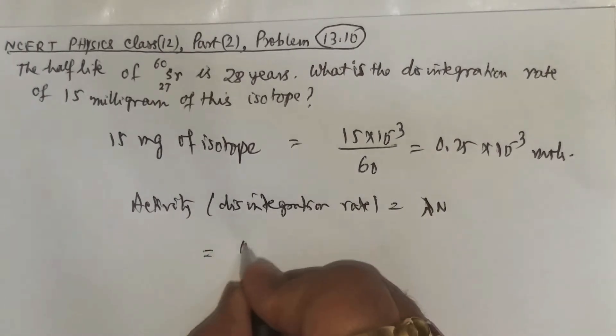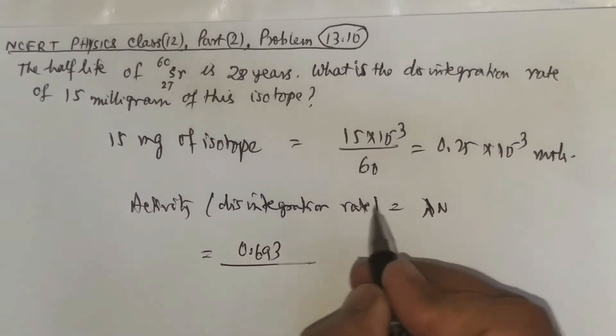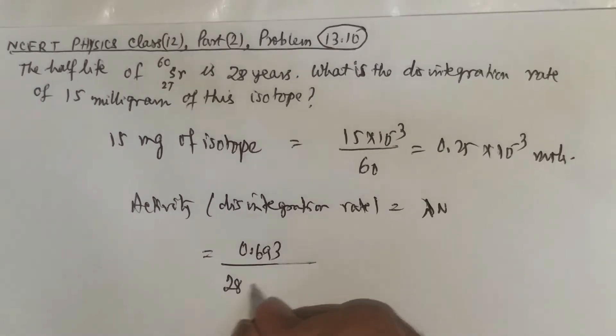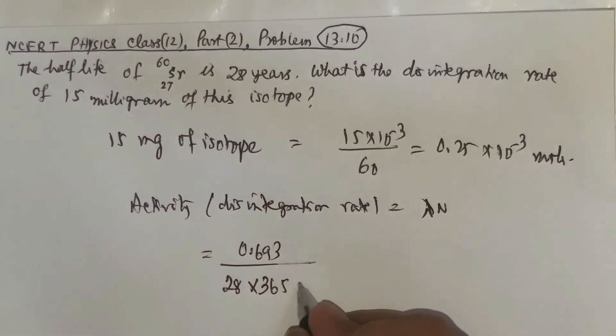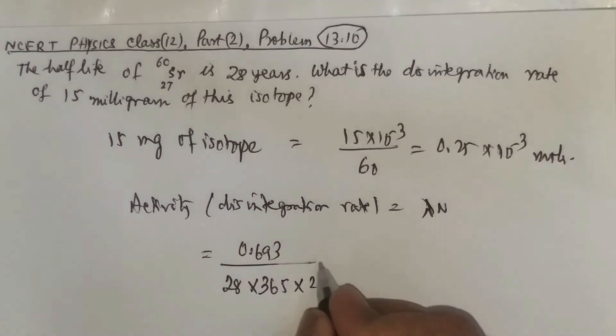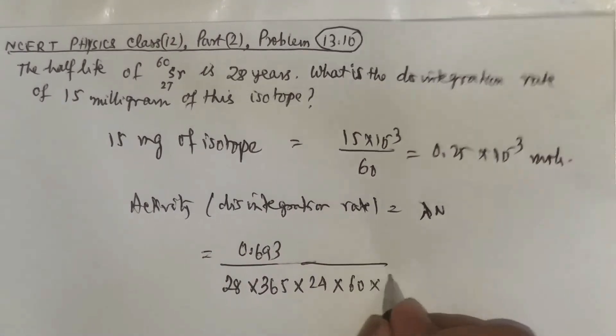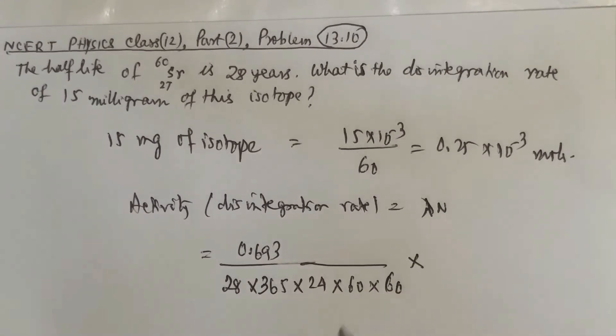Now what is lambda? Lambda is 0.693 divided by the half-life period. Half-life period is 28 into 365 (it was in years), 365 days into 24 into 60 into 60, multiplied by n.